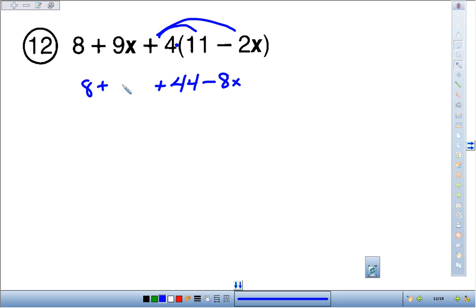Out front, you had 8 and you had a 9x. Combining like terms: I've got 9 of them, minus 8 of them, leaves 1 of them, or just an x. 8 plus 44 makes 52.